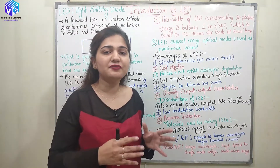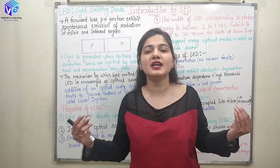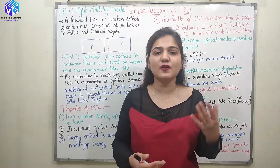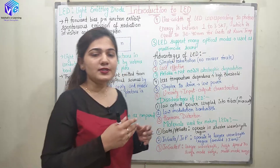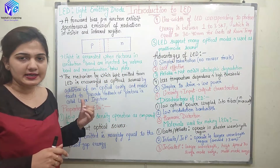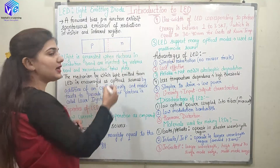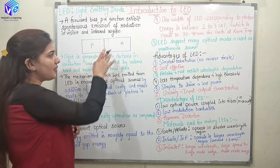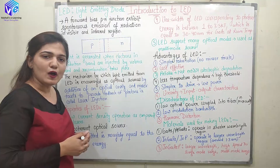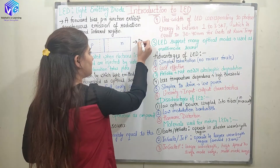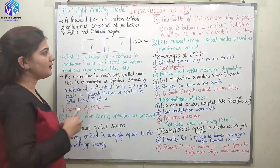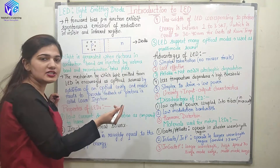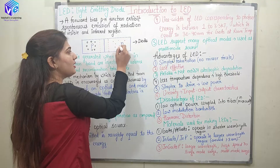Semiconductors have conductivity in between metals and insulators. With the help of an energy band diagram I will also be showing you the properties of the semiconductor. Semiconductors are used to make the LEDs. Here we have a P-type junction as well as an N-type junction. When both P and N junctions are combined, they form a diode. In the P junction we have excess holes, and in the N junction we have excess electrons.